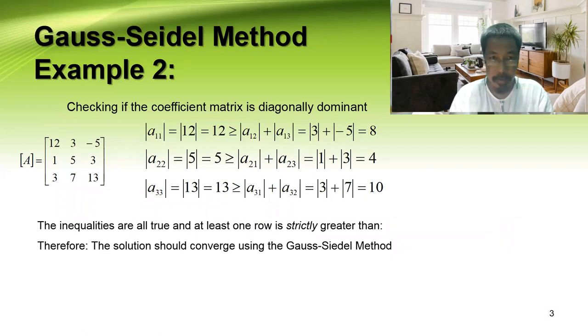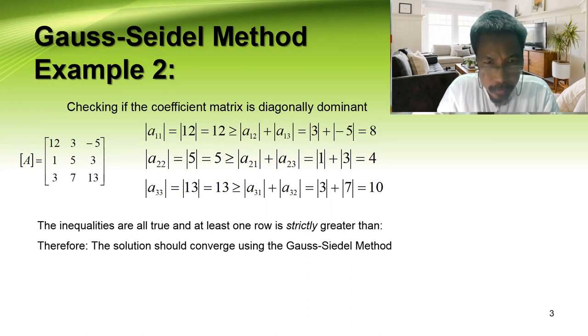Checking if the coefficient matrix is diagonally dominant. If the coefficient matrix is diagonally dominant, then we can say that the matrix converges.